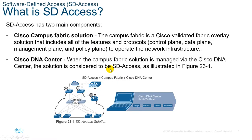SD-Access has two main components: the Cisco Campus Fabric Solution and the Cisco DNA Center. The Campus Fabric is a Cisco-validated fabric overlay solution that includes all the features and protocols — control plane, data plane, management plane, and policy plane — to operate a network infrastructure. SD-Access is the Campus Fabric plus the integration of the Cisco DNA Center. When the Campus Fabric Solution is managed via the Cisco DNA Center, the solution is considered to be SD-Access.